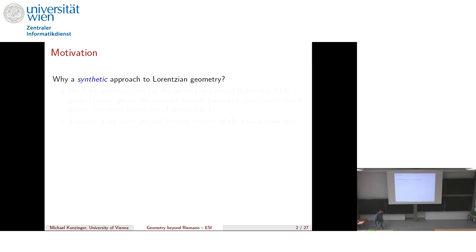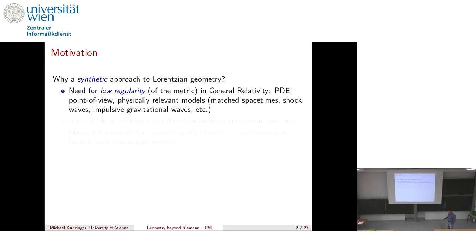What's the motivation to look at synthetic Lorentzian geometry? A main motivation for this entire branch of research comes from general relativity, because a lot of concrete models in relativity automatically have low regularity in the metric. For example, when you think of the gravitational field of a star, or the mass density of a star, you automatically have a jump, and so you cannot expect your space-time metric to be at least C², and when you go below C², more and more tools from Lorentzian geometry become unavailable. One still wants a good description of such models.